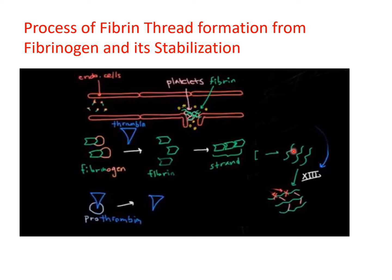The fibrin strand immediately has cross bridges between strands, and these cross bridges are hydrogen bonds. Then thrombin also activates factor 13, and when factor 13 is activated, covalent bonding appears between these fibrin threads, making it a stable fibrin clot.